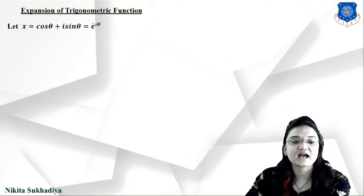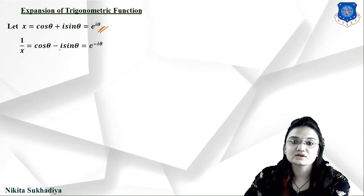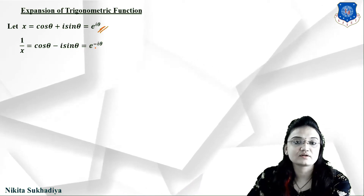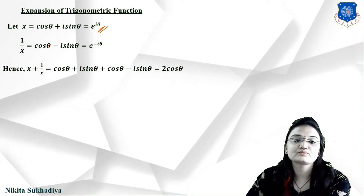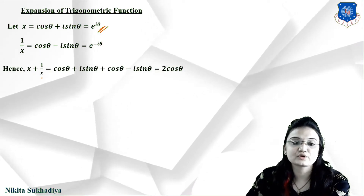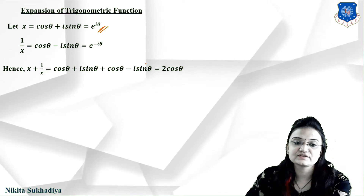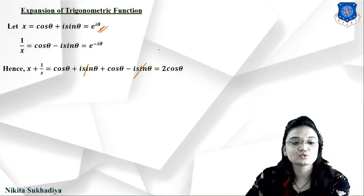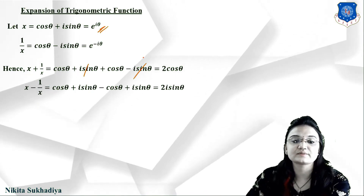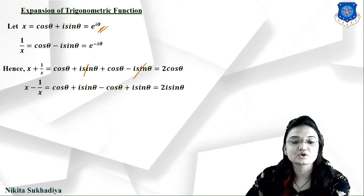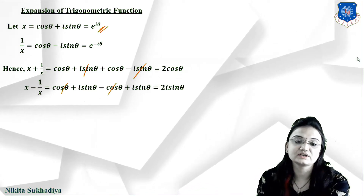Let x = cosθ + isinθ = e^(iθ). Then 1/x = cosθ − isinθ = e^(−iθ), as studied in our previous lecture. Adding both: x + 1/x = 2cosθ. Subtracting: x − 1/x = 2isinθ.